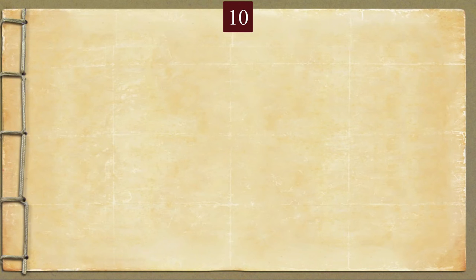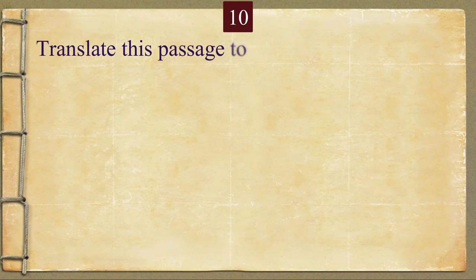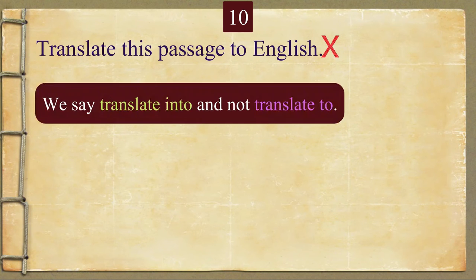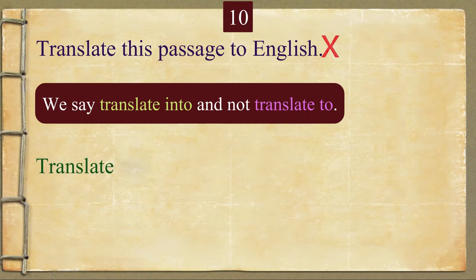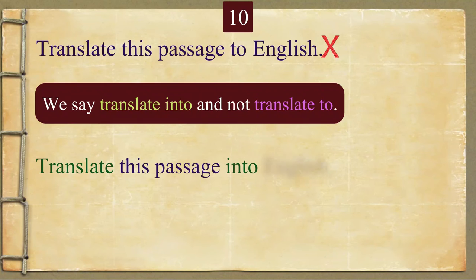Next: 'Translate this passage to English.' We say 'translate into' and not 'translate to.' The preposition 'into' is used to suggest transformation. Please repeat the correct sentence: Translate this passage into English.